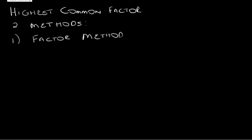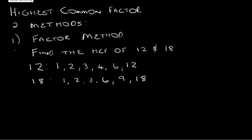So there are two methods. The first one is the factor method. The factor method involves us writing down the factors of 12 and 18. So the factors of 12 are 1, 2, 3, 4, 6 and 12. These are the numbers that divide into 12.